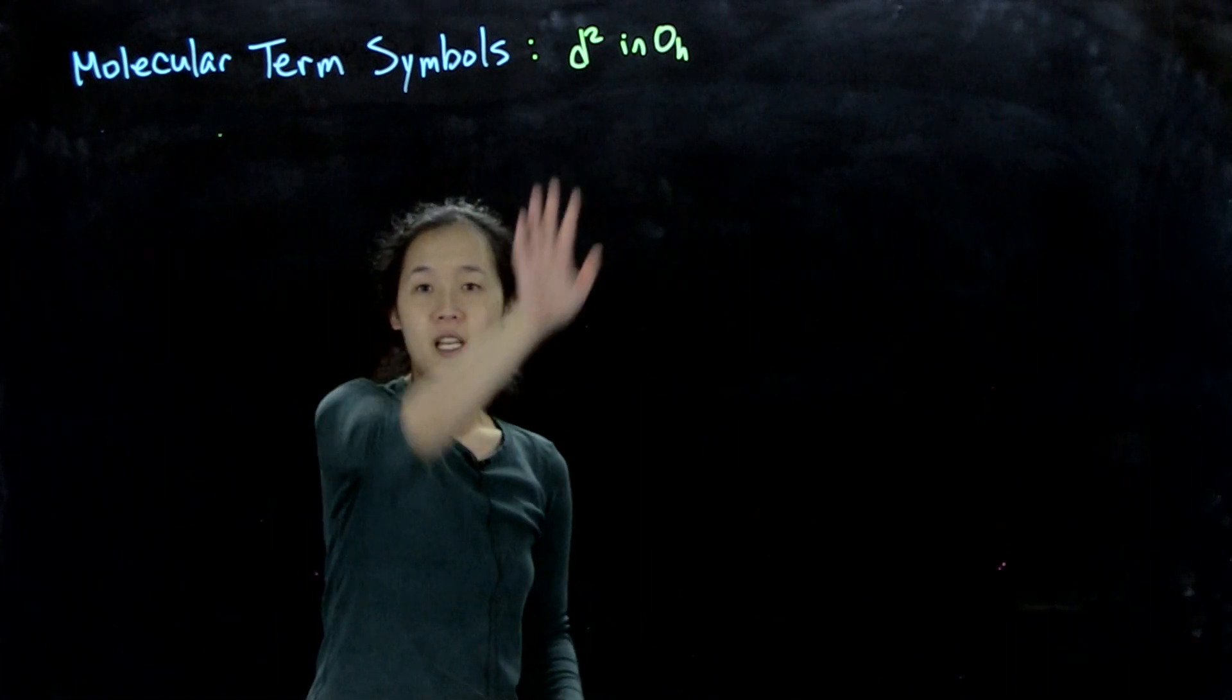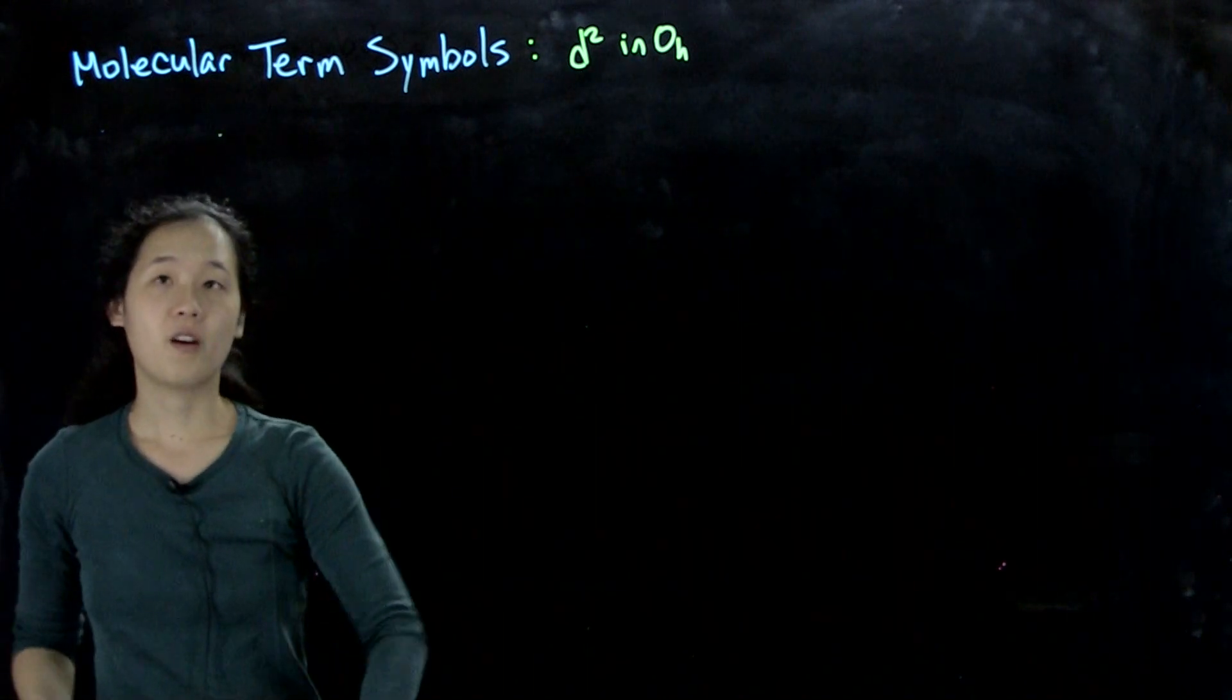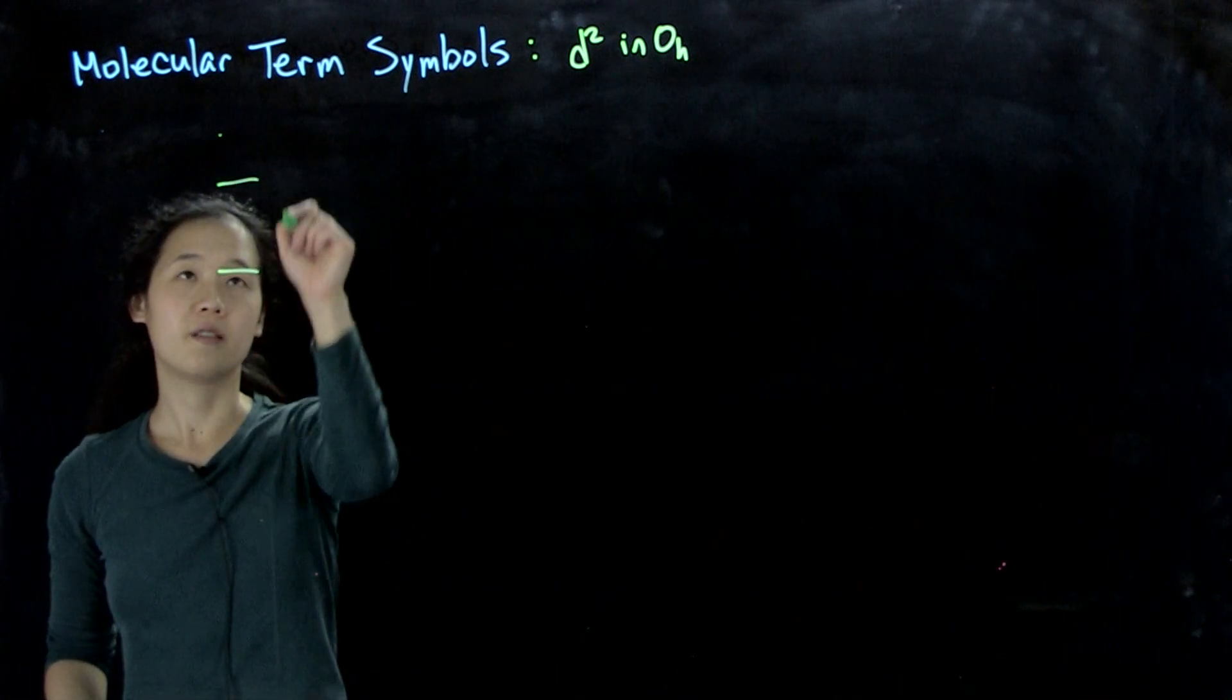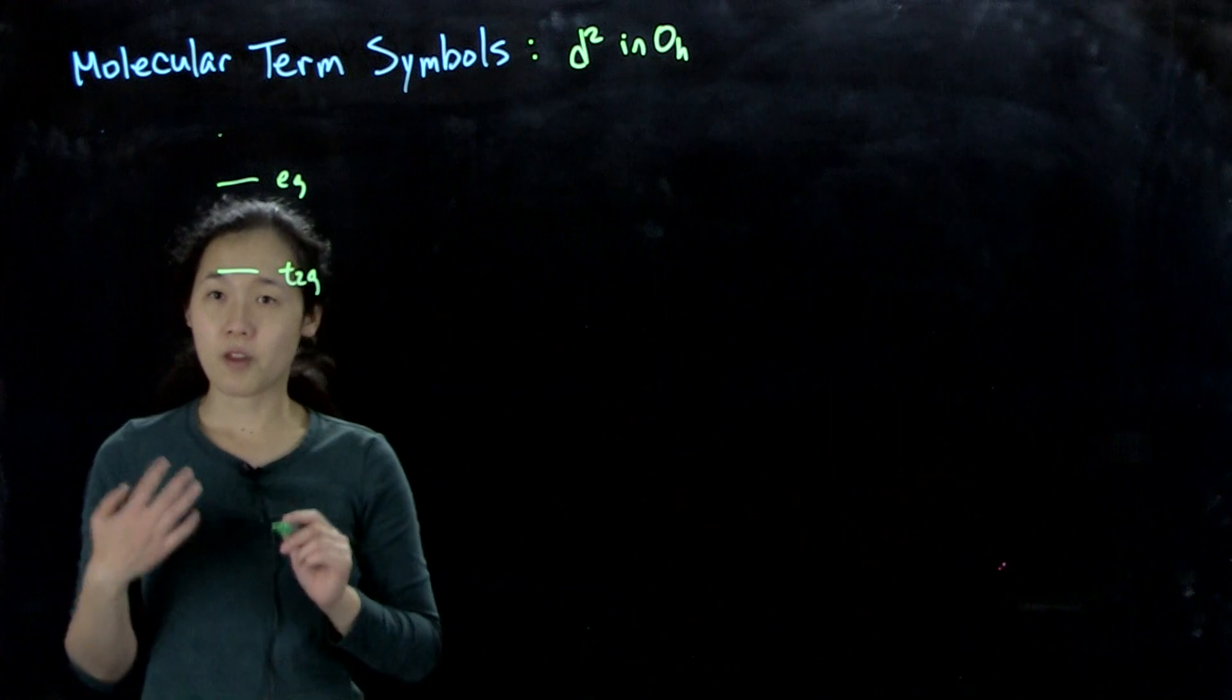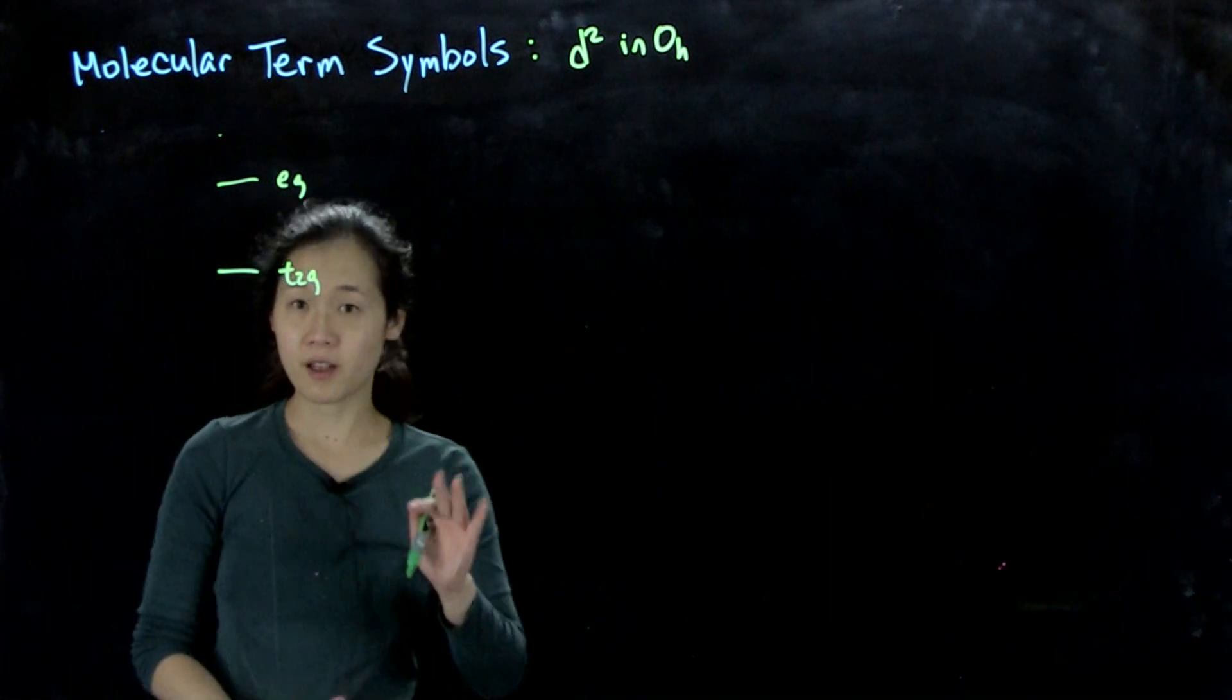So in an octahedral field, we still have our eG T2g orbitals, but now we can have three different configurations. So again, configurations, not terms.